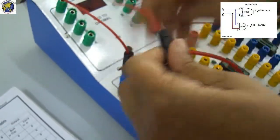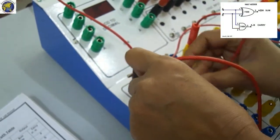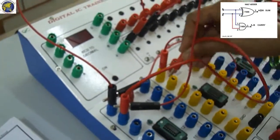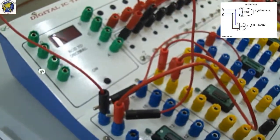Next, 7486 pin number 3 is connected to output sum. Now pin 3 of 7486 is connected to first output sum.